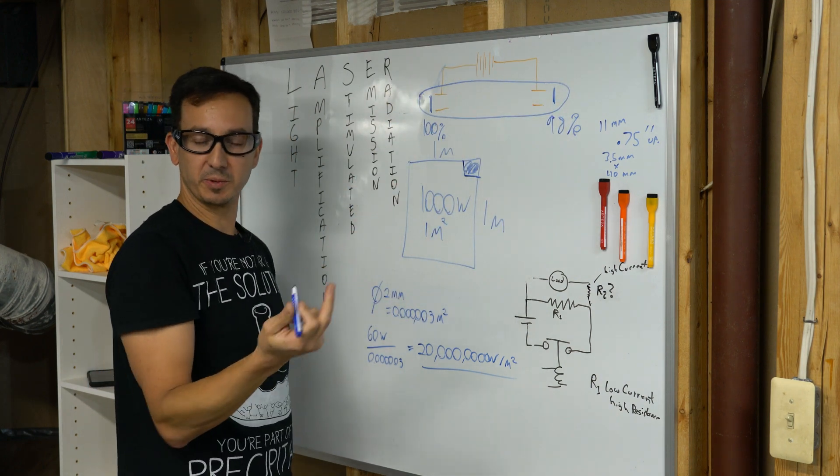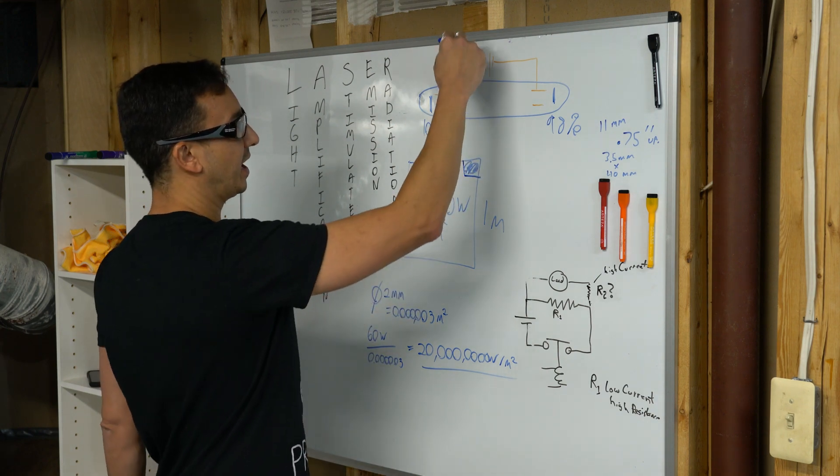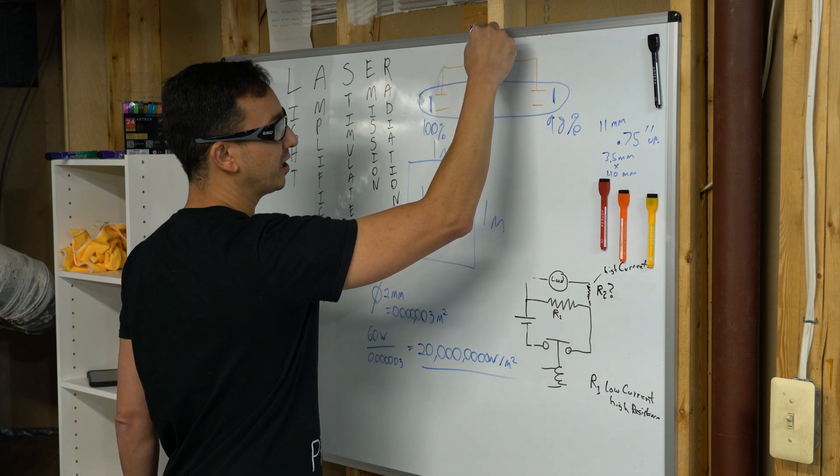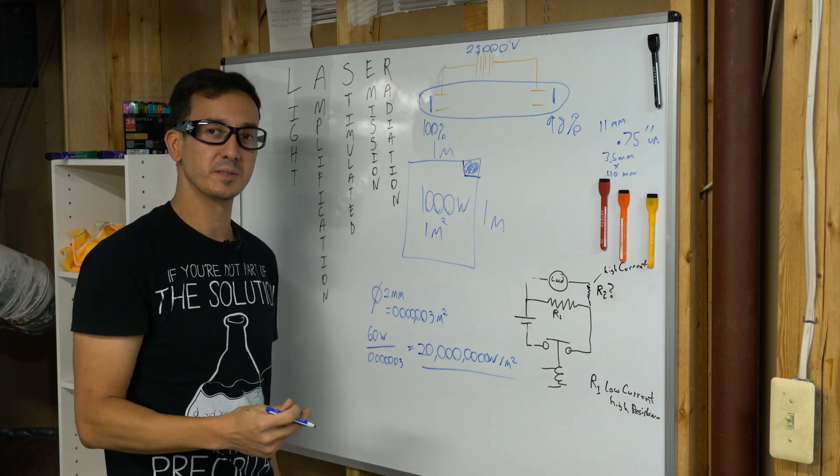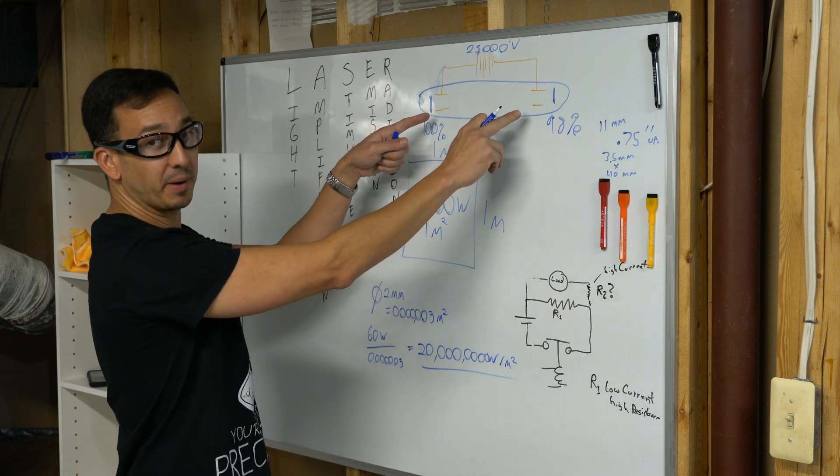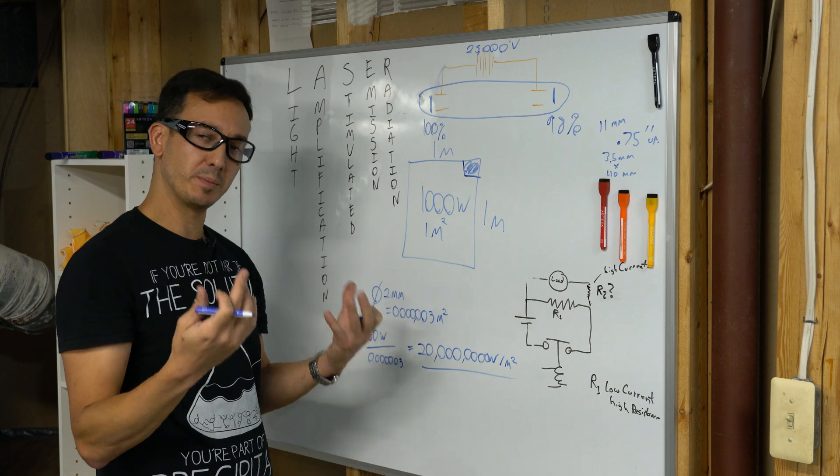There's a gas, in this particular case a mixture of carbon dioxide and nitrogen, and a high voltage power supply. For this particular laser, a tube of this size, it's 25,000 volts. The gas is excited by the high voltage, which causes it to become ionized and start producing light.